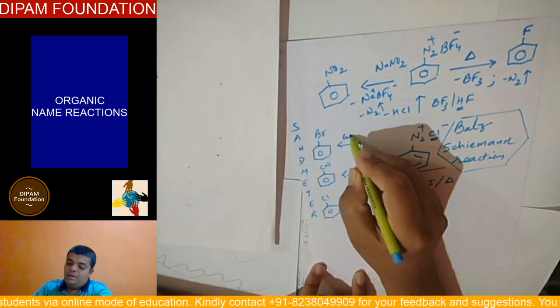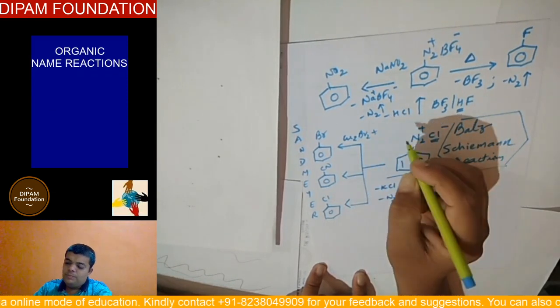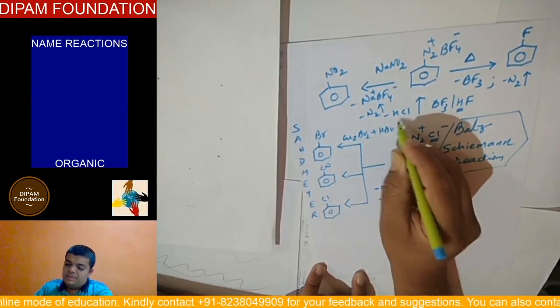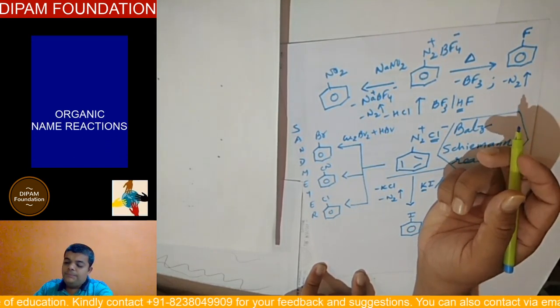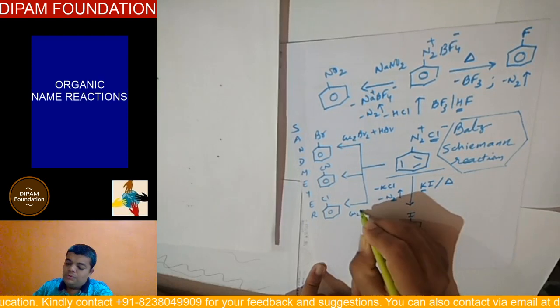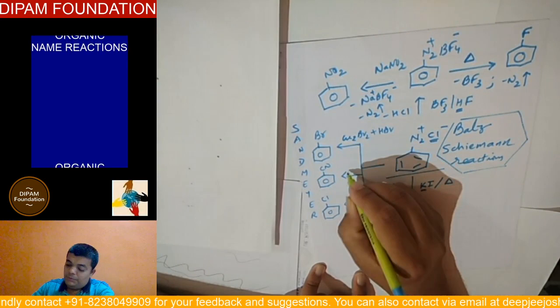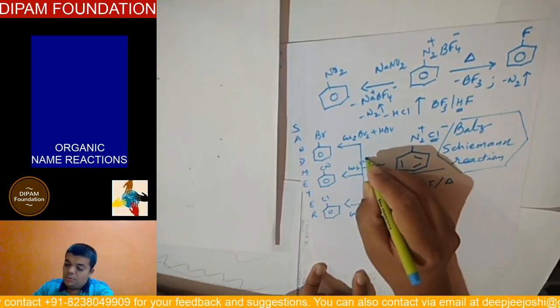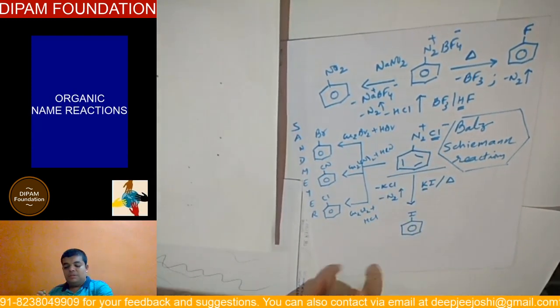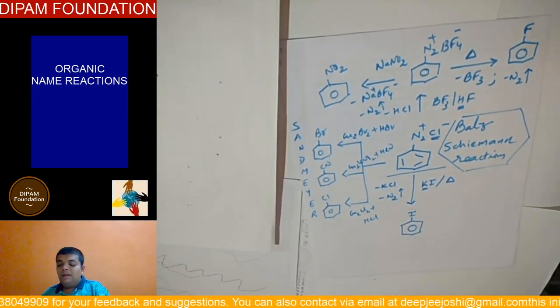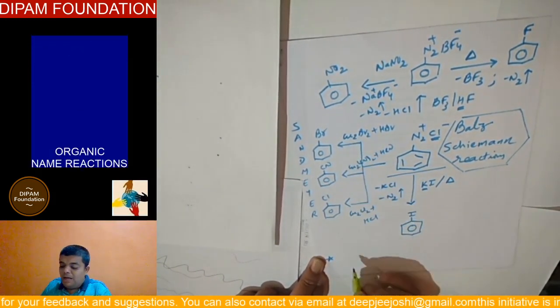And in this Sandmeyer, this is Cu2Br2 plus HBr use karenge. Cu2Cl2 plus HCl use karenge. Cu2CN2 plus HCl use karenge.